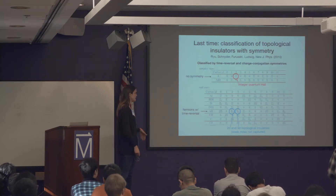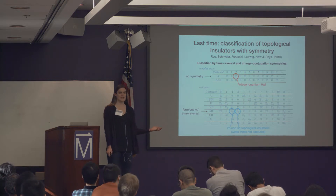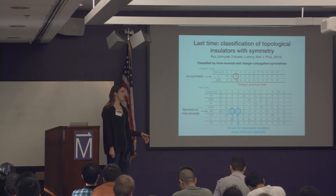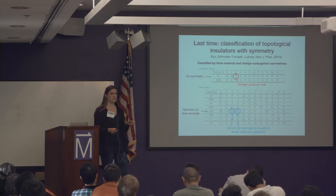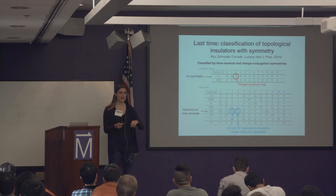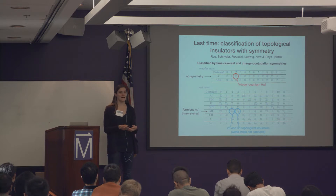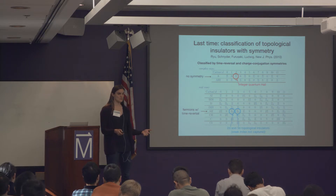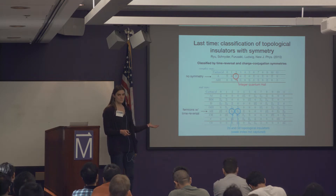We ended with a classification table, and you might have thought all the classification is done — but the point is that the symmetries in that table are only a selection called on-site symmetries, because they leave single lattice sites invariant. Time reversal symmetry and particle-hole symmetry have this property. Crystal lattices have many other symmetries — not only translation symmetry but lots of crystal symmetry — and it turns out these crystal symmetries can also protect topological phases not captured in that table.